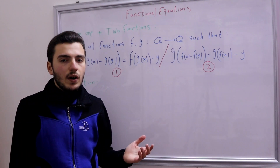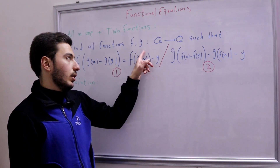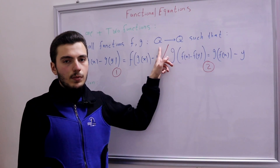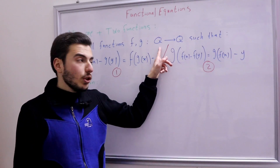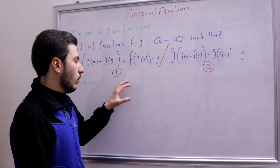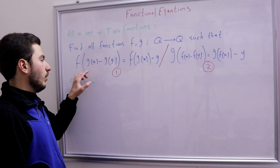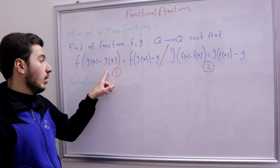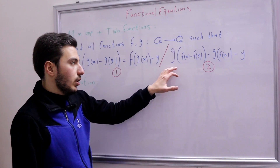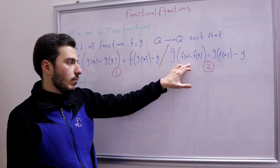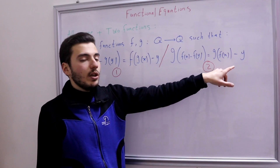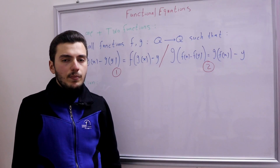In this problem we're asked to find all functions f and g — remember, we have two functions f and g both from ℚ to ℚ. We need to handle rational numbers such that we have two functional equations: the first one is f(g(x) − g(y)) = f(g(x)) − y, and the second one is g(f(x) − f(y)) = g(f(x)) − y.